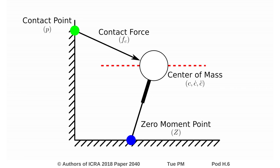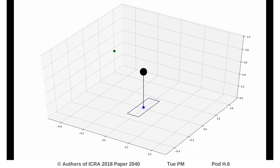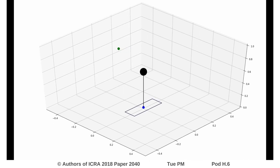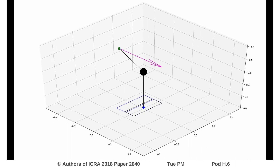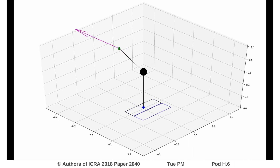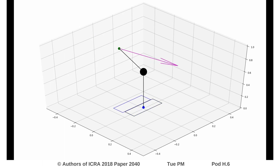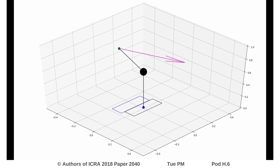To accomplish this, we first begin by noticing the impact the inclusion of an external force has on the ZMP support polygon. When the ZMP is predicted to leave the support polygon, we aim to create an external force that appropriately shifts the support polygon such that the ZMP remains inside.